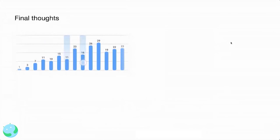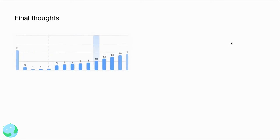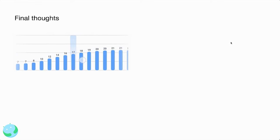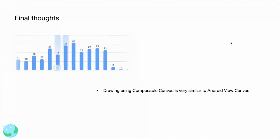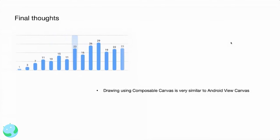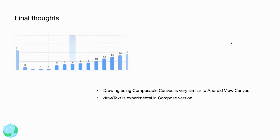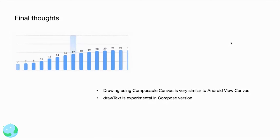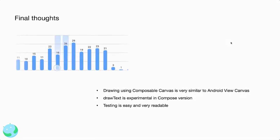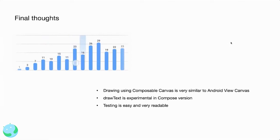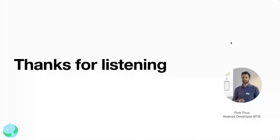In conclusion: drawing using composable canvas is very similar to Android view canvas. The draw text function is experimental in the Compose version and will probably be stable someday, but right now I'm using the native one. Testing is easy and very readable in composable canvas, and animation has really superb documentation. Thank you very much for listening and I'm open for your questions.